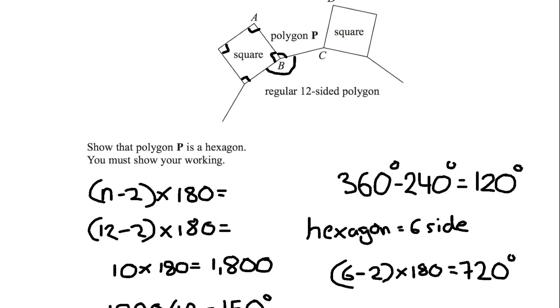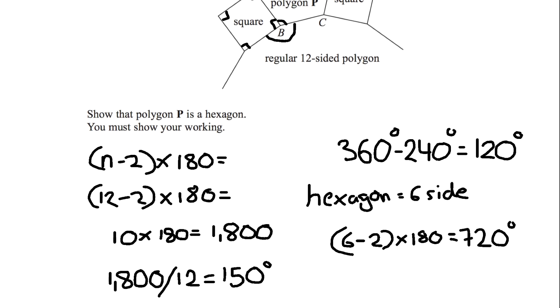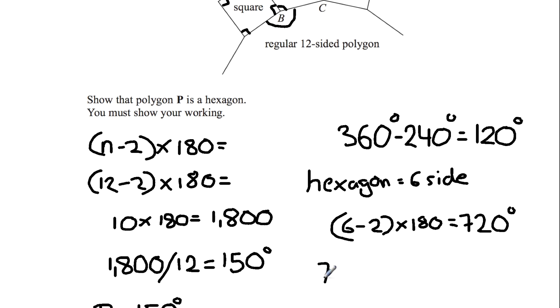Now to find the individual angle of a hexagon we're going to divide 720 by 6, which equals 120 degrees.